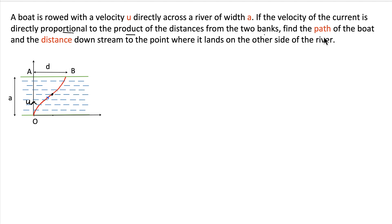And then we need to find the path of the boat, the curve OB that we see, and the distance downstream to the point where it lands on the other side. So we need to also find the distance d. Let's say the boat starts from O and it lands at B. So we need to find the path of the boat and distance d, these two things.